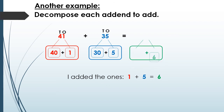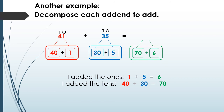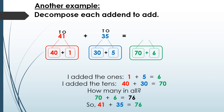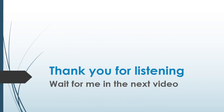Now I add the ones: 1 plus 5 equals 6. I add the tens: 40 plus 30 equals 70. Use these two answers together — 70 plus 6 equals 76. So 41 plus 35 equals 76. Thank you so much for listening — that was our lesson. Wait for me in the next video! Bye-bye!